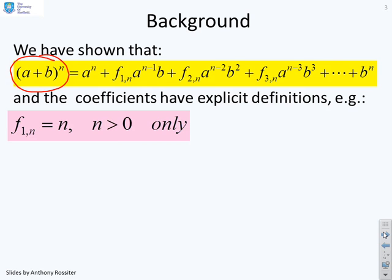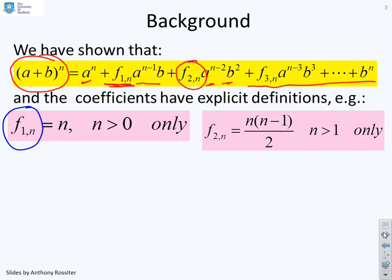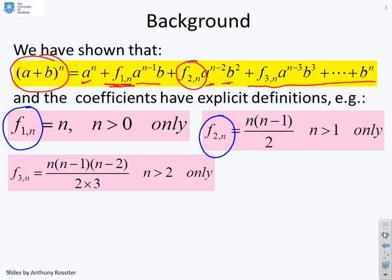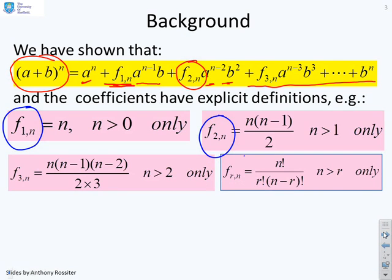If you were to multiply that out longhand, you would get A to the N, then some coefficient F1N times A to the N minus 1 times B, some other coefficient times A to the N minus 2 times B squared, and so on. The coefficients are well-defined: F1N equals N; F2N equals N(N-1) over 2; F3N equals N(N-1)(N-2) over 6. For the general term FRN, there is a general expression based on factorials.